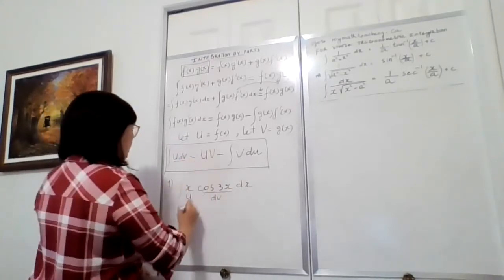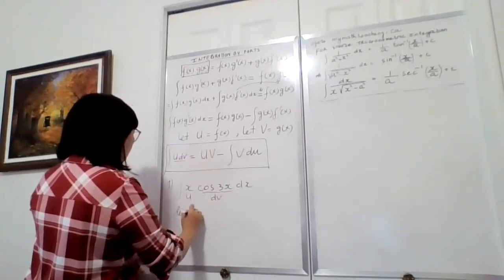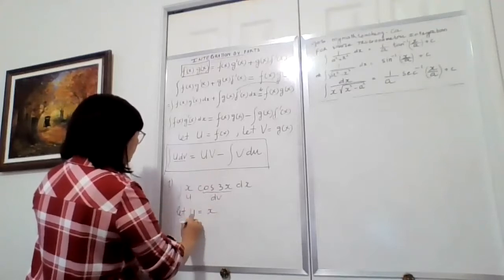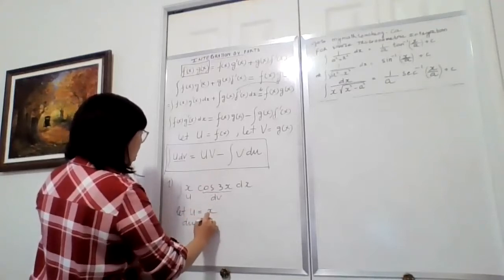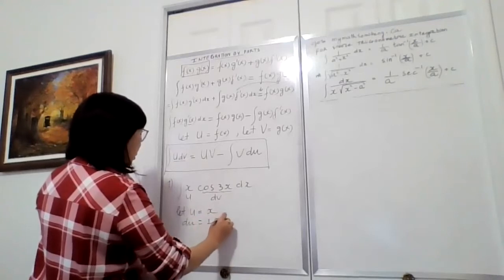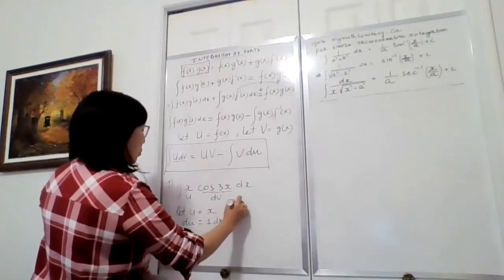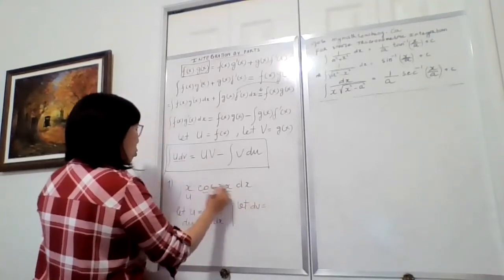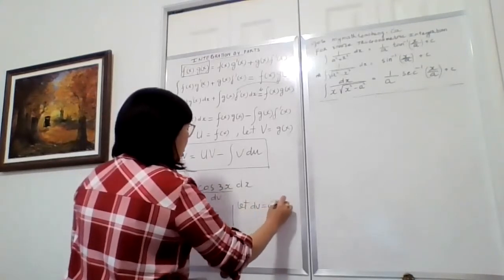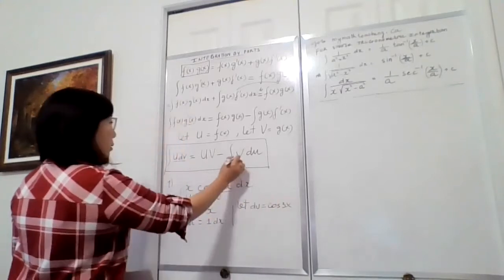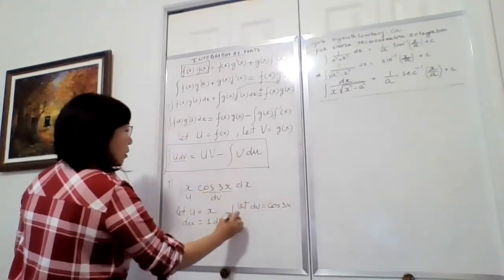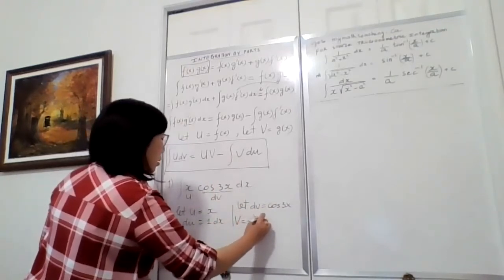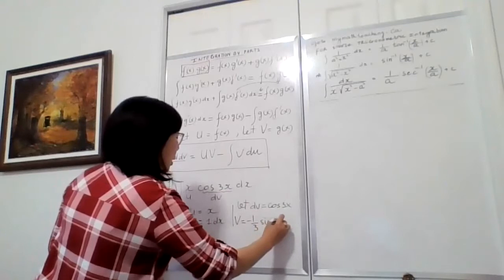Following the function: let u equal x, then du equals 1·dx. Now let dv equal cos(3x)dx. So then taking the anti-derivative of dv, which gives v, equals negative one-third sin(3x).